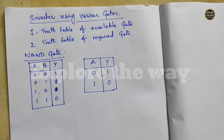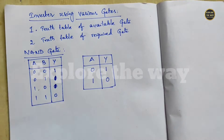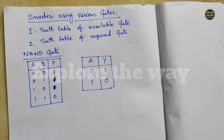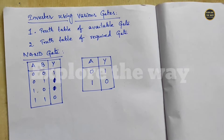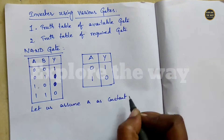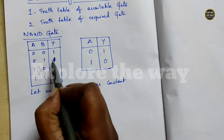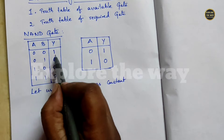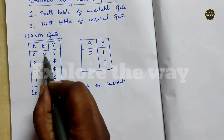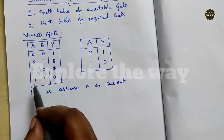output is 0. We need to derive this functionality from a NAND gate. The NAND gate has two inputs, but for an inverter we need only one input, so we can make the other input constant. Let us assume A is constant. If A is 0, the output is 1 irrespective of the second input — whether second input is 0 or 1, output remains at 1. So A equal to 0 is not suitable.